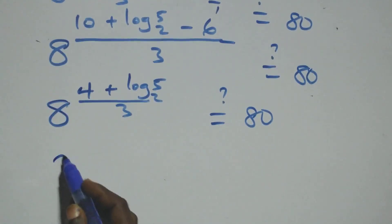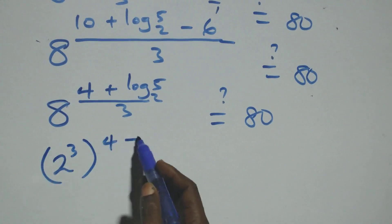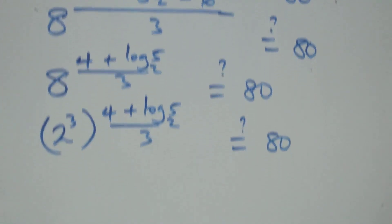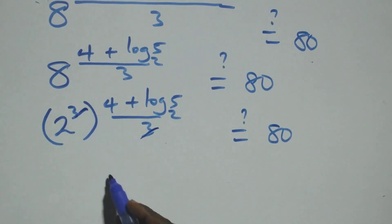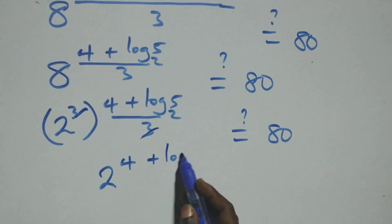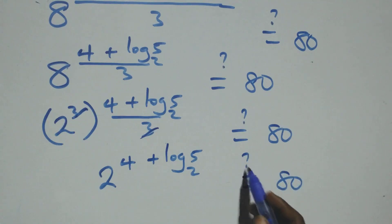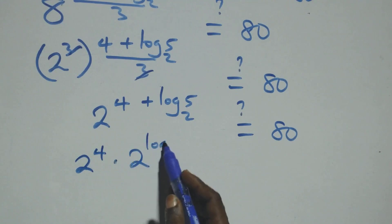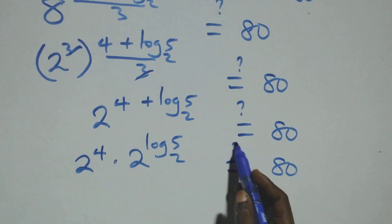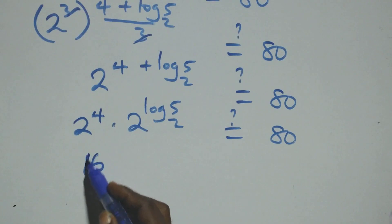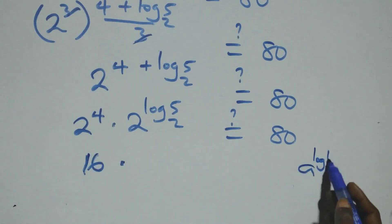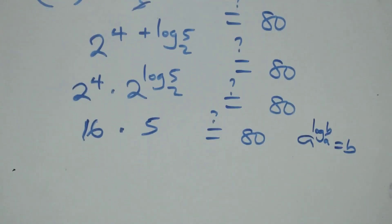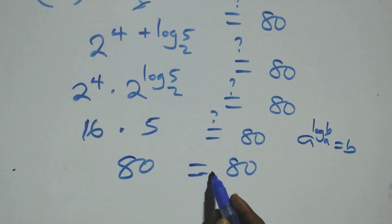We express 8 as 2 raised to power 3, raised to power (4 + log₂5)/3 equals 80. This simplifies to 2 raised to power (4 + log₂5). Using the rule a raised to power log base a of b equals b, we get 2⁴ times 5, which is 16 times 5 equals 80. Left hand side equals right hand side.